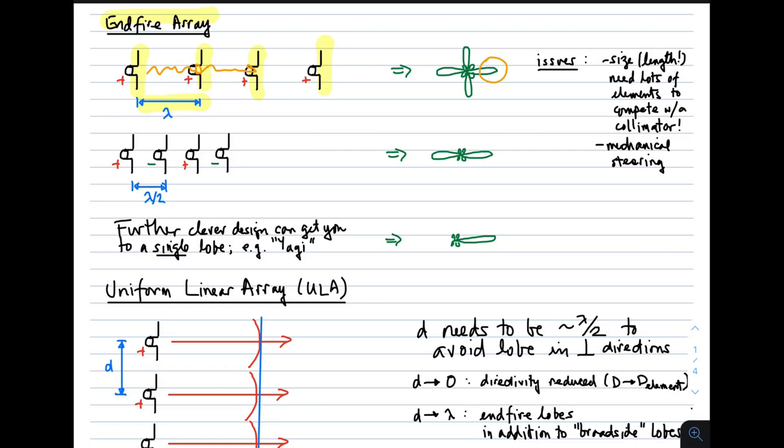You will achieve very high gain depending on how many elements you have. The problem is you get high directivity in other directions as well. You get a wave going to the right with high power density and a wave going to the left with high power density, because the same geometry applies. Since I've chosen all sources to be in phase, I can also have a broadside beam going up and down.